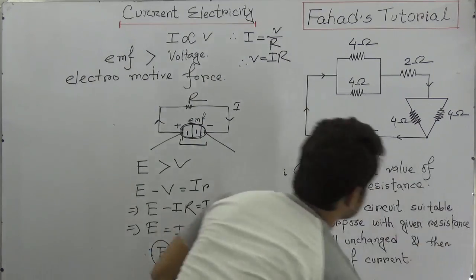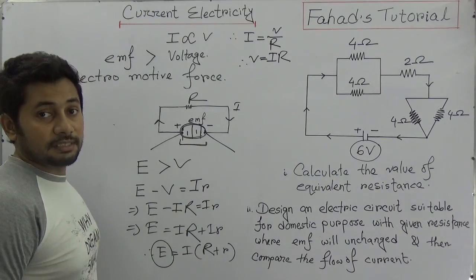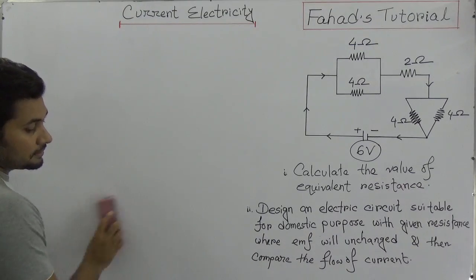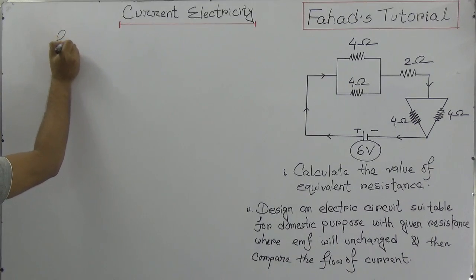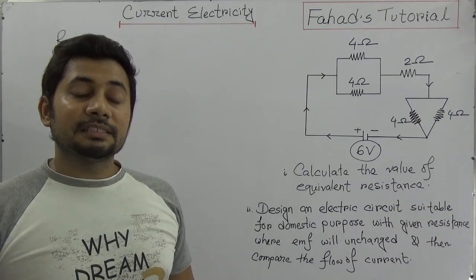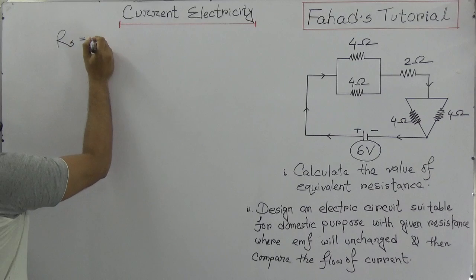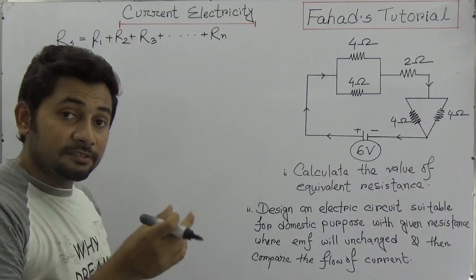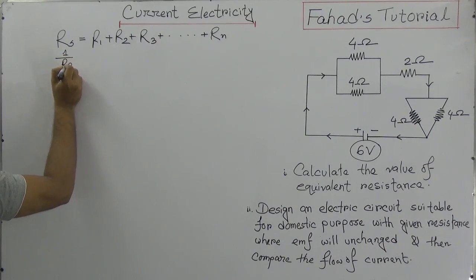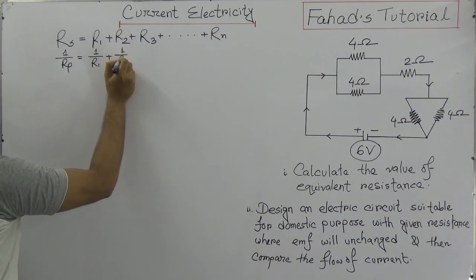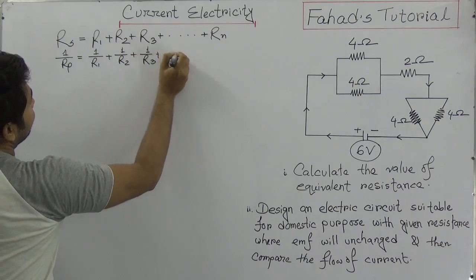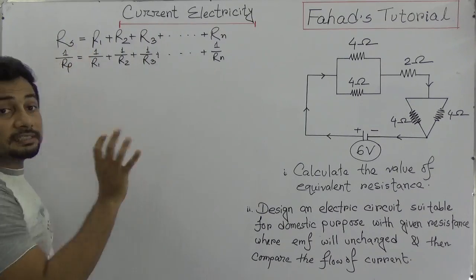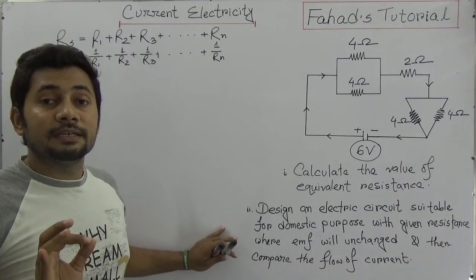Now let's focus on the first question: calculate the value of equivalent resistance. I hope you all know the formula. For series connection, RS equals R1 plus R2 plus R3 and so on. For parallel connection, 1 by RP equals 1 by R1 plus 1 by R2 plus 1 by R3 and so on. This is how we find equivalent resistance.